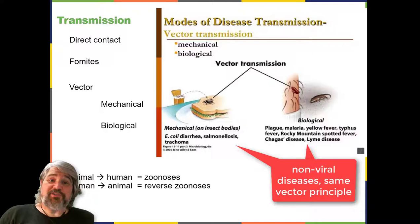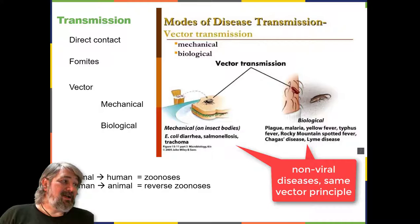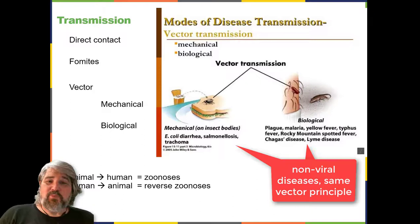Biological transmission occurs when the arthropod carries the viral pathogen inside its body and transmits it to the new host through biting. Examples of diseases transmitted this way include plague, which is caused by bacteria; malaria, a protozoan; yellow fever, typhus fever, Rocky Mountain spotted fever, Chagas disease, and Lyme disease—all diseases in which the pathogen is residing inside the vector animal.